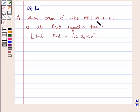Which term of the AP: 121, 117, 113 and so on, is its first negative term? Hint: find n for a_n < 0.